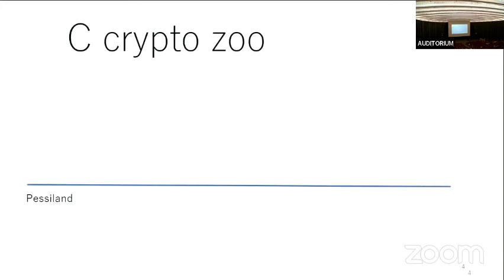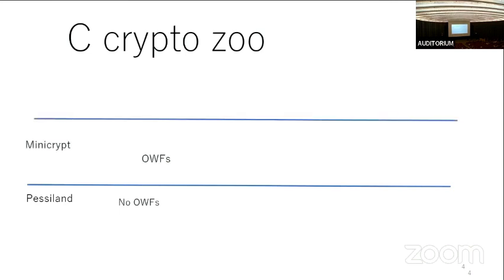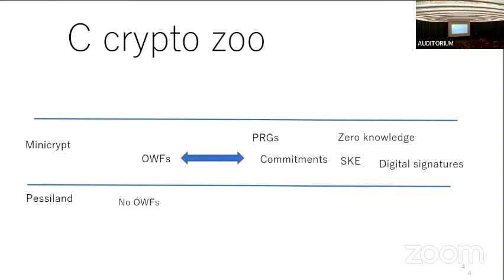Yesterday I also explained classical cryptography worlds. We have three worlds: Pessiland, where no one-way function exists, meaning no classical crypto is possible; Minicrypt, where one-way function exists; and if one-way function exists, many other primitives exist — like pseudo-random generators, commitment, zero-knowledge, secret key encryption, digital signatures, and so on. They are all equivalent to one-way functions.